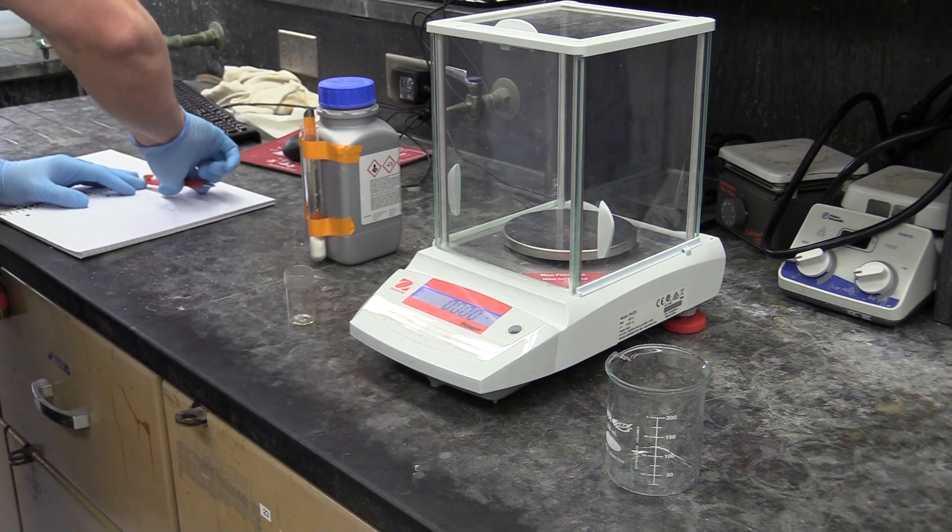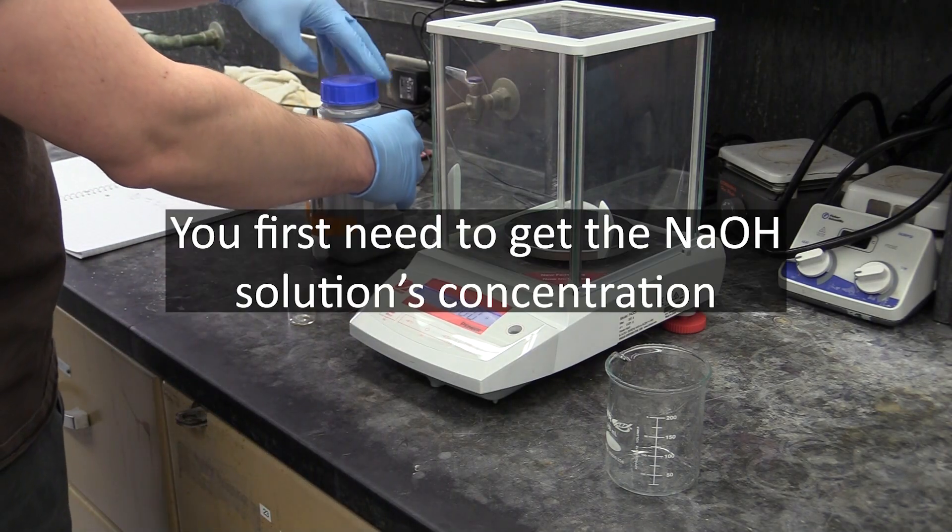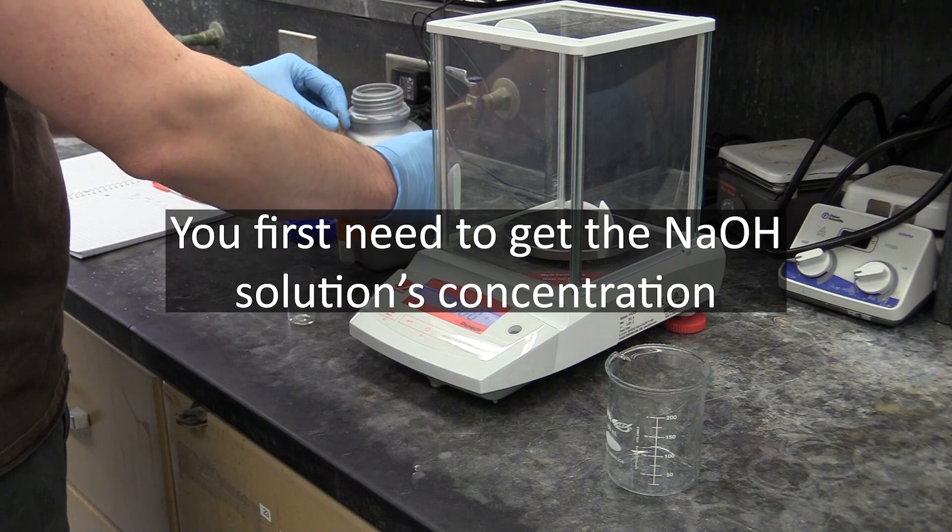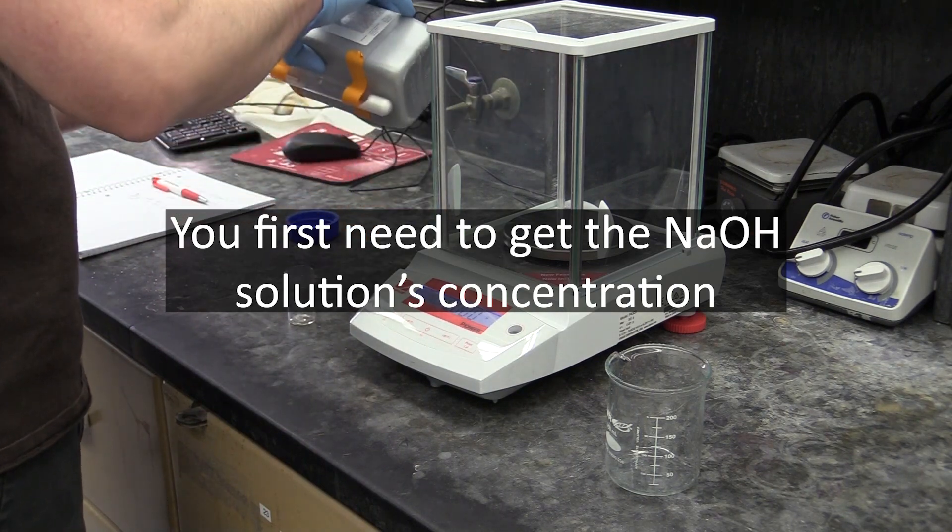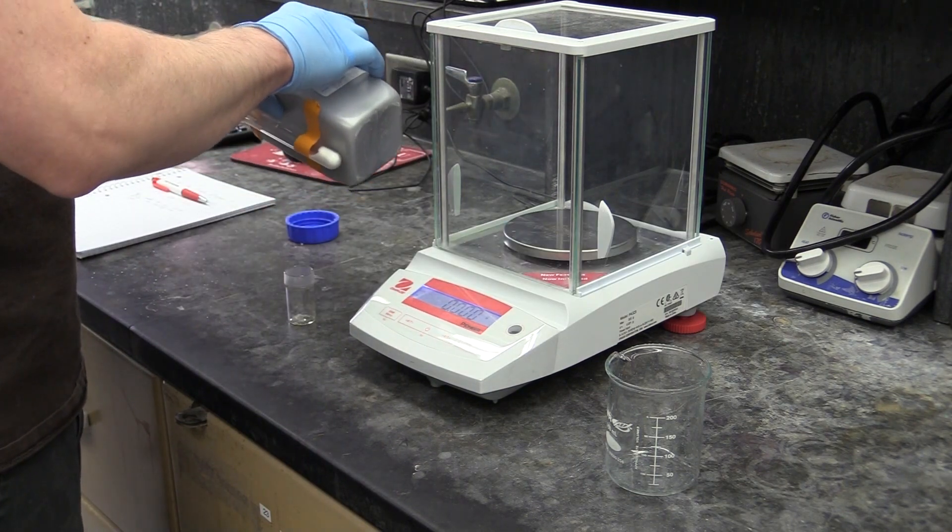Before you can use your sodium hydroxide to analyze an acid, you have to determine its concentration. From a procedure standpoint, the way you'll do this is nearly identical to how you'll analyze your unknown acid.